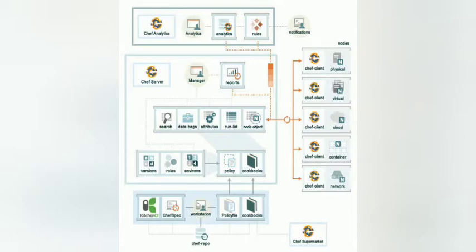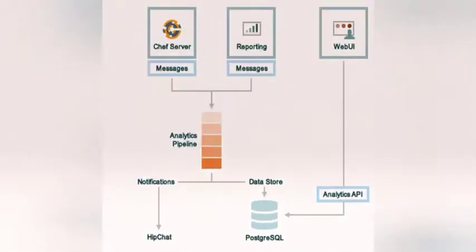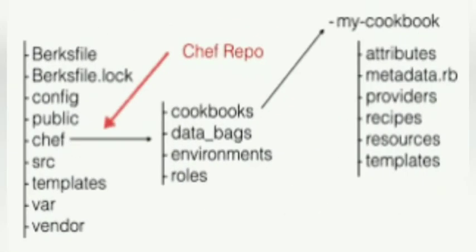In February 2013, Opscode released version 11 of Chef. Changes in this release included a complete rewrite of the core API server in Erlang. On April 2, 2019, the company announced that all their products are now open source under the Apache 2.0 license.